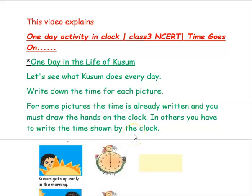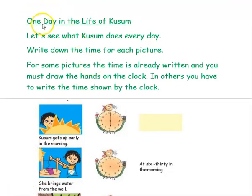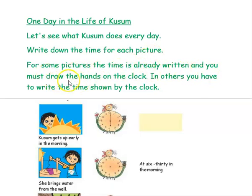Hi, we are from At Home Tuition. In this video we are going to see how to read time from the clock based on one day activity in the life. The given question is one day in the life of Kusum. Let's see what Kusum does every day. Write down the time for each picture. For some pictures the time is already written and you must draw the hand on the clock. In others you have to write the time shown by the clock.